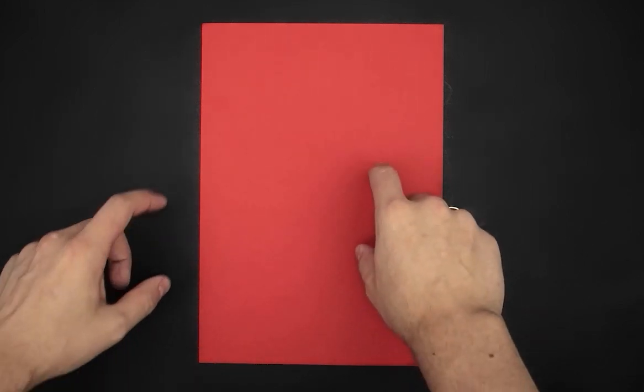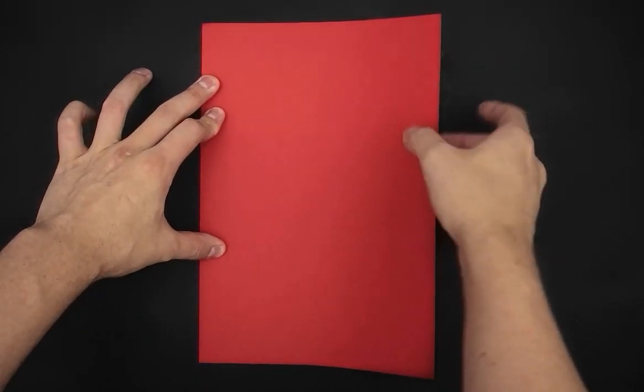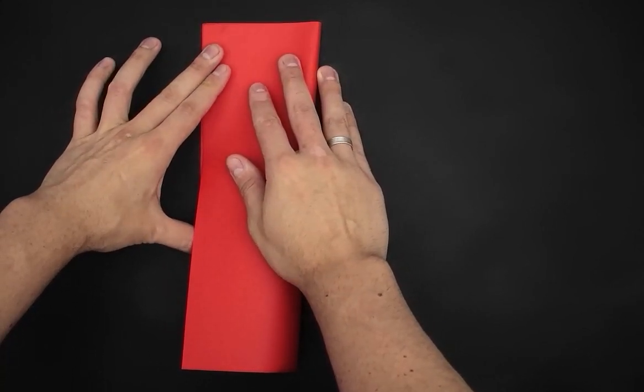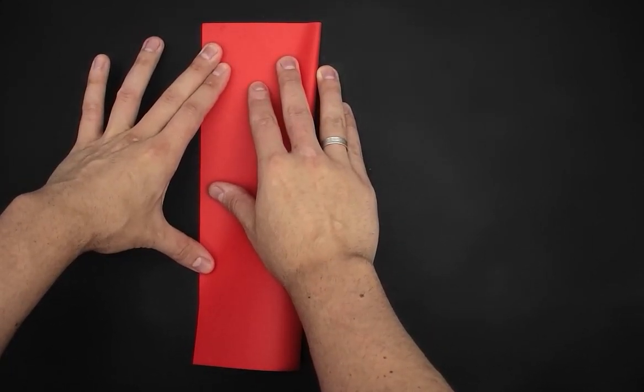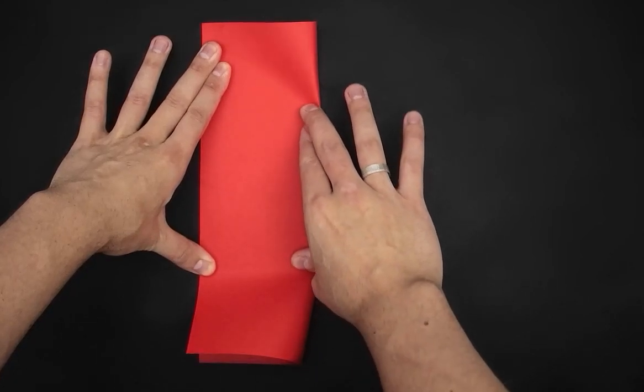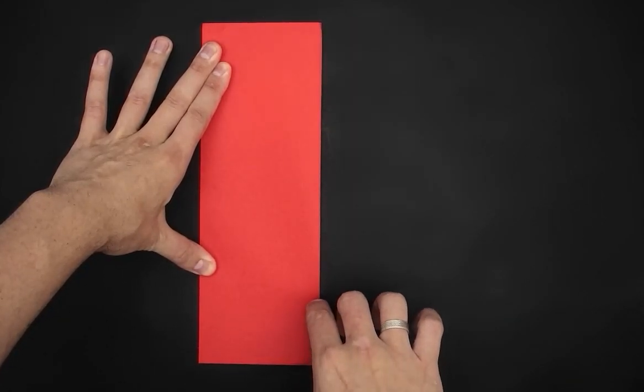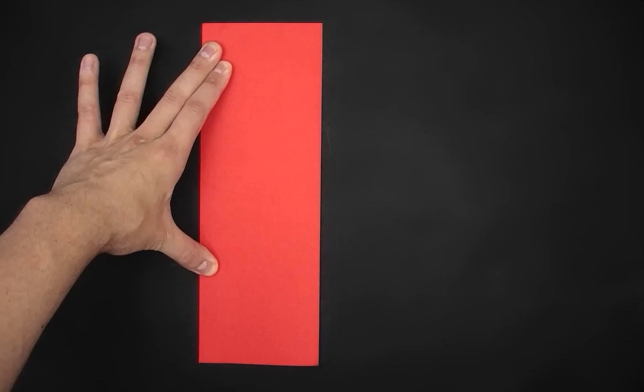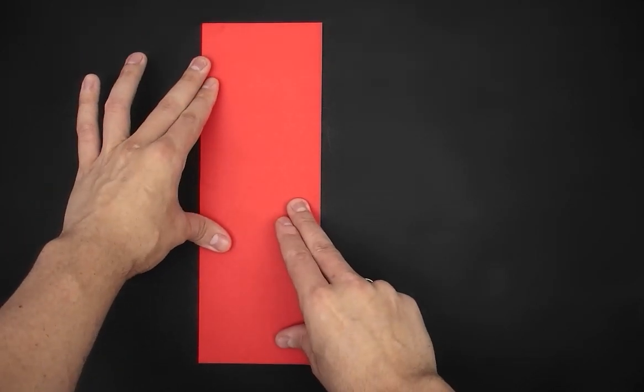To start, we'll only need a whole sheet of paper. With the paper in this position, we're going to have to fold it in half like this. Once done, we can unfold it.